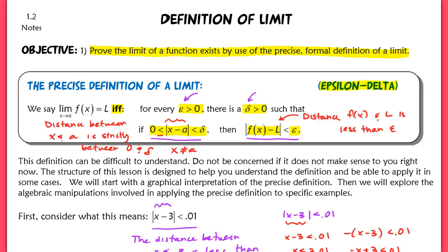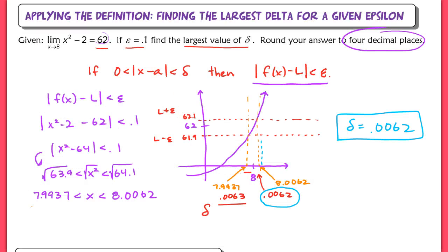This is part two of section 1.2 on the definition of a limit. We're going to come back to our notes now and finish the remaining example problems from our previous lesson. In that lesson, we got practice applying the definition by finding the largest delta for a given value of epsilon.